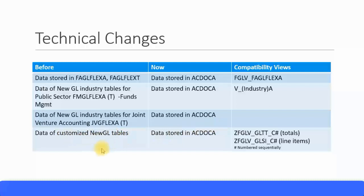For any customized new GL tables created earlier in your ERP6 system, that data will again be pointed to the ACDOCA table. The compatibility views for customized tables will be named ZFGLV_GLTT_C followed by a sequential number depending on when you created your customized tables — one, two, three, four, and so on. Here, TT refers to totals tables and GLSI refers to line item tables for your customized new GL tables. The Z prefix makes it easy to identify that these compatibility views are for custom tables.